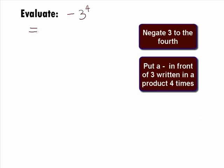The thought behind evaluating this is that we need to negate 3 to the 4th power by putting a negative in front of the base of 3 in a product 4 times, which is not the same thing as 4 times 3.